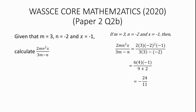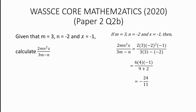2 which will give us 11, so we have minus 24 over 11, which is an improper fraction and can be converted to a mixed fraction which will give us minus 2 and 2 over 11.